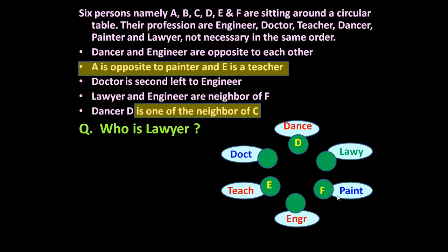Only one profession is left, which is painter, so painter will occupy this remaining position. Now A is opposite to painter — painter is here, so opposite to painter is A, and A is a doctor. The next underlined statement: dancer D is one of the neighbors of C. On one side of dancer D is A, so the other side must be C. Only B is left and one position remains, so B is the engineer.